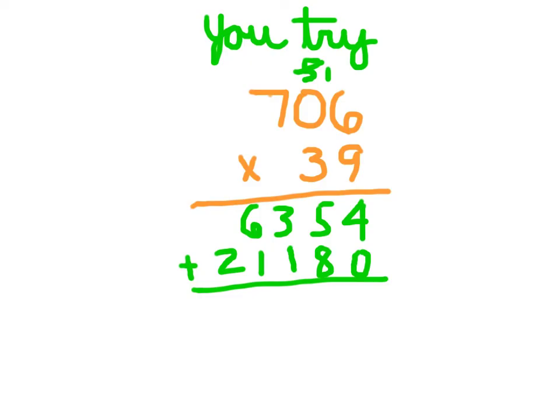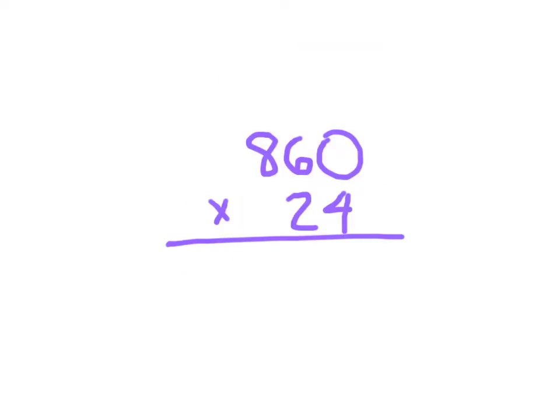And then hopefully you added correctly then. So the product is 27,534. So again, the 0 is just a placeholder.